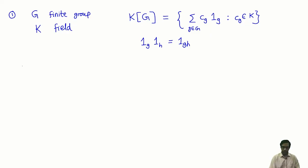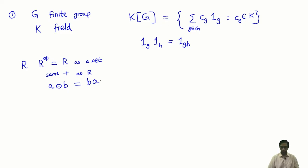Recall what the opposite of a ring was. If I have a ring R, not necessarily commutative, then R^op is a new ring. It is R as a set — in fact, R as an abelian group as well, the same plus. But the multiplication alone is the opposite: the new multiplication A·B in R^op is defined as the product B·A in R. We saw an example of the matrix ring, which was isomorphic to its opposite because of the transpose map A → A^T, which changes the order of multiplication.